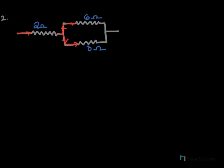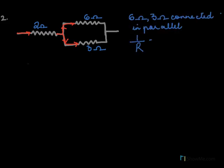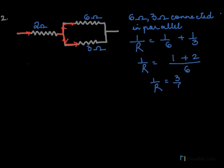The 6 ohm and 3 ohm resistors are connected in parallel because different currents flow through them. For parallel resistors, we use: 1/R equals 1/6 plus 1/3. Taking LCM as 6, this gives 1/R equals 3/6, which is 1/2, so R equals 2 ohms.